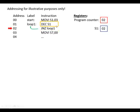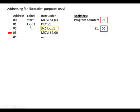We subtract one from S1 again — it becomes one. That was not zero, so we load the program counter with address 01 and go back up. We subtract again and it's now down to zero. Since the result is zero, we carry on to the next instruction. We loaded three into the register and subtracted one until it reached zero, so we did this loop of two lines three times.